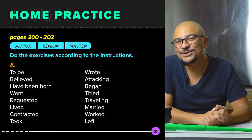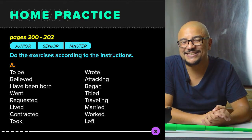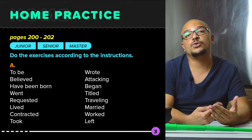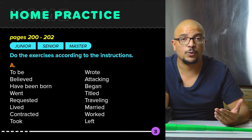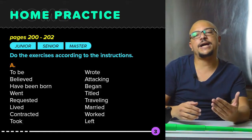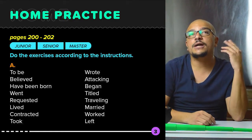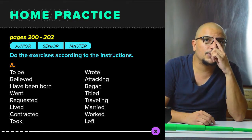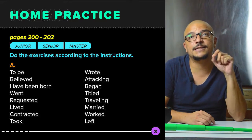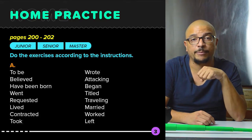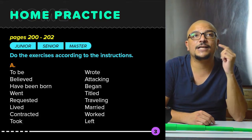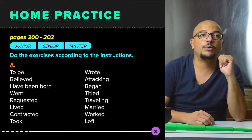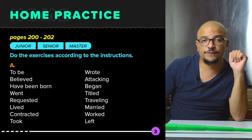So guys, let's go to the home practice. Home practice is on pages 200 to 202. What do you have to do? You have to watch the video and pay attention to the verbs in the simple past form. You're going to write down as many verbs as you can. So we have the verbs here.